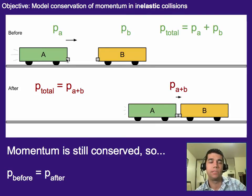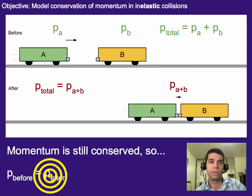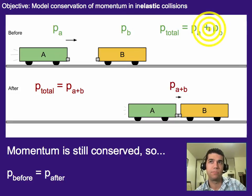So the way I like to set up these conservation of momentum equations is since momentum before equals momentum after, I really just need to add up all the momentum of stuff before and then add up all the momentum of stuff after and set those two things equal to each other. So regardless of how many things are involved, that's all you have to do.